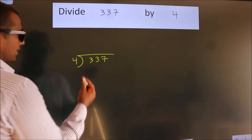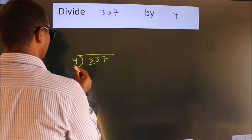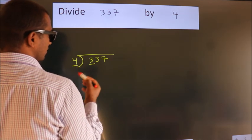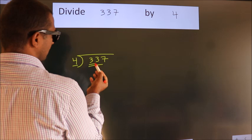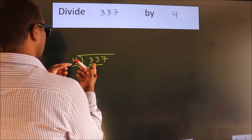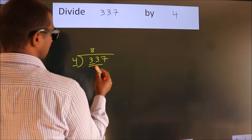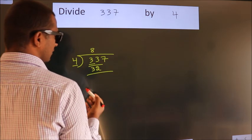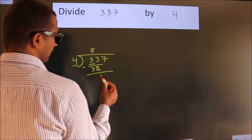Next, here we have 3, here 4. 3 smaller than 4, so we should take 2 numbers. 33. A number close to 33 in 4 table is 4, 8, 32. Now, we should subtract. We get 1.